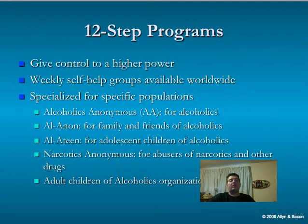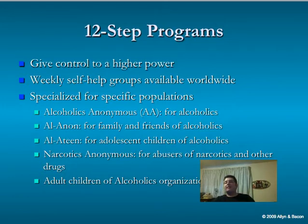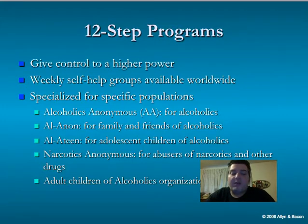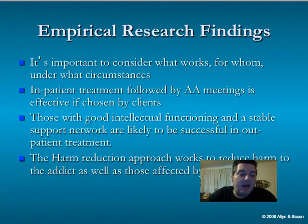12-step programs give control to a higher power and include weekly self-help groups available worldwide, specialized for special populations. There is Alcoholics Anonymous for those who are alcoholics, Al-Anon for family or friends of alcoholics, Alateen for adolescent children of alcoholics, Narcotics Anonymous for abusers of narcotics, Nar-Anon for their families or loved ones, and Adult Children of Alcoholics — people who grew up in a home with an alcoholic and carry those symptoms into adulthood.